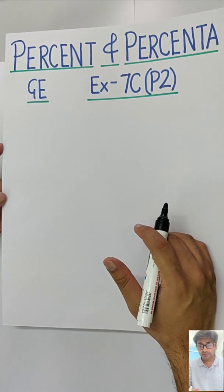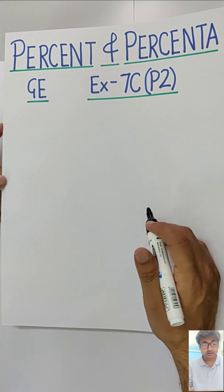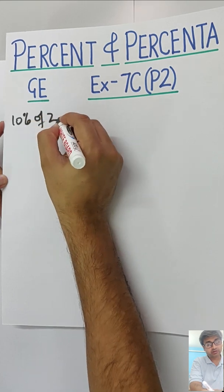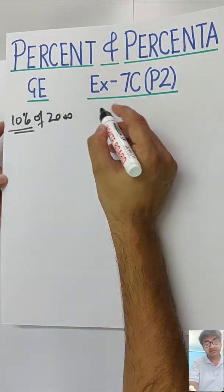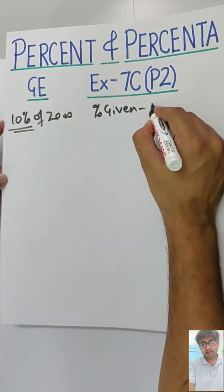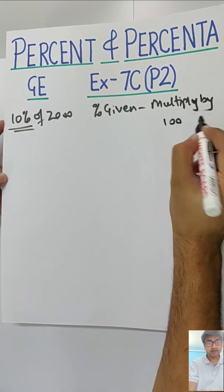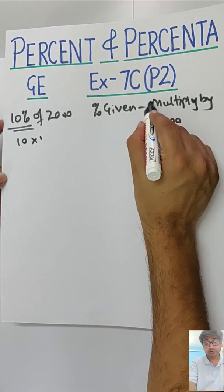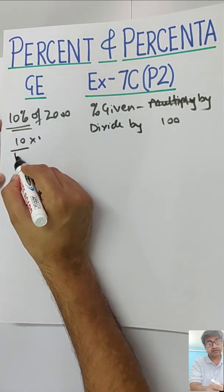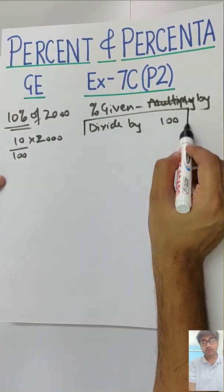Before we get into 7C, repeating whatever I have been repeating in previous videos so you get it very clear. How does it go? If you are given 10% of 2000, percentage is given, then what you do? Divide by 100. So basically 10 upon 100 of 2000. Divide by 100 when it is given.